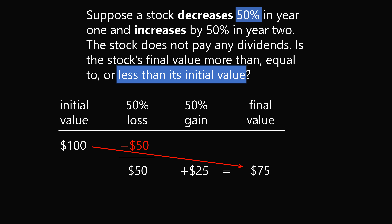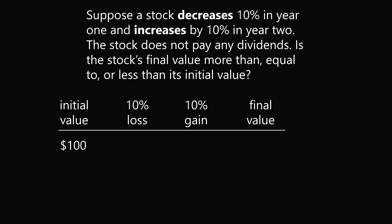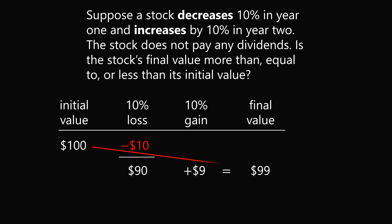This is an example with 50%, but the same is true if we work it out with 10%. Your $100 loses 10%, which is $10, leaving you with $90. You gain 10% on the $90, which is $9. And $90 plus $9 equals a final value of $99 — less than the initial value. So again, the correct answer is less than the initial value.